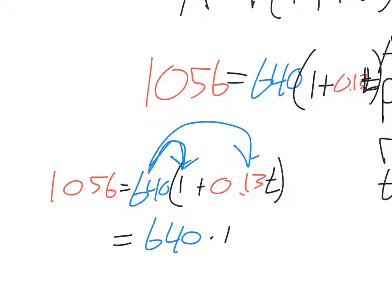So we get 640 times 1, and then you're going to have 640 times 0.13, and there's that T we're trying to solve. That's still 1056. I'll keep each step as I go.